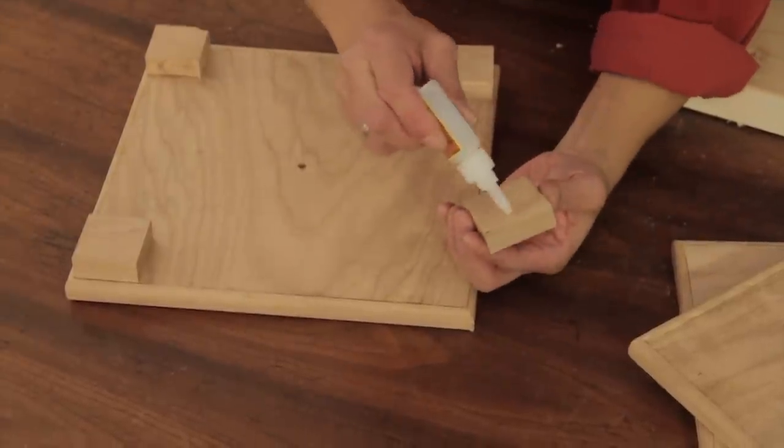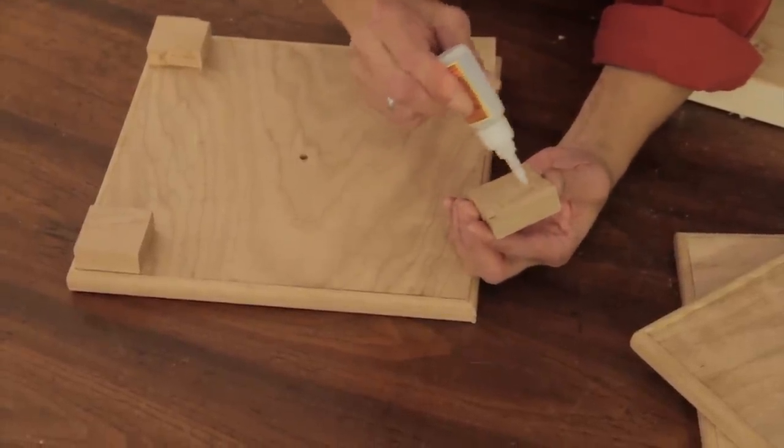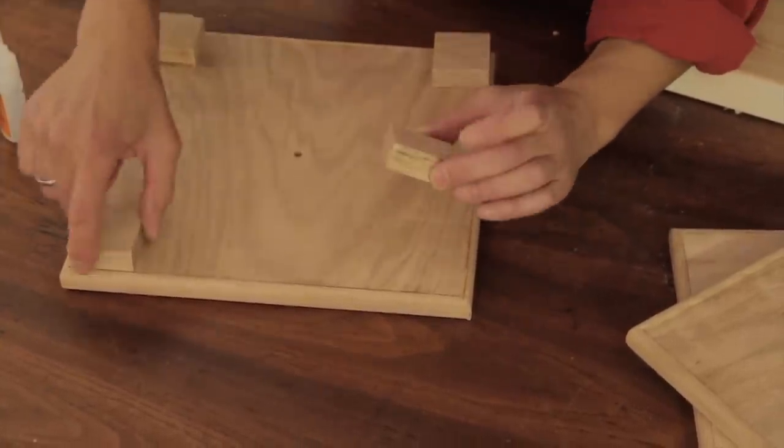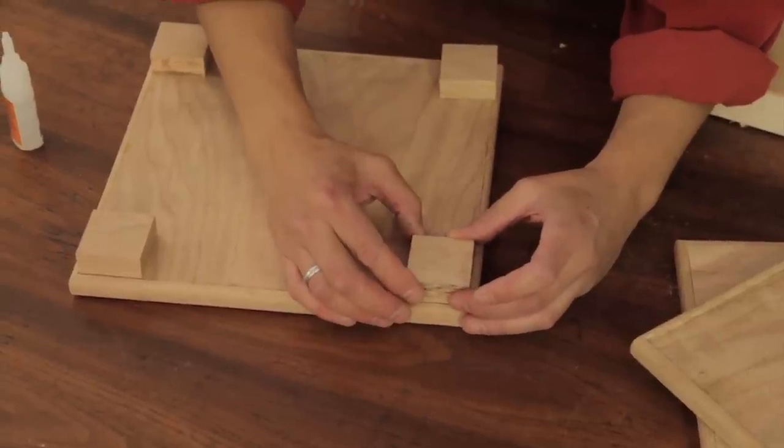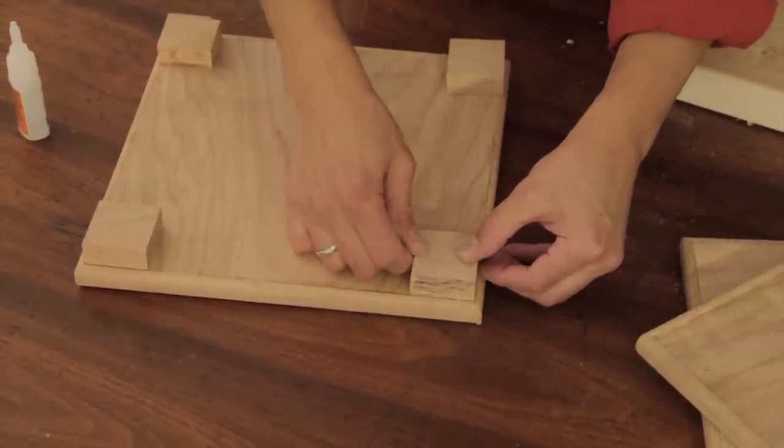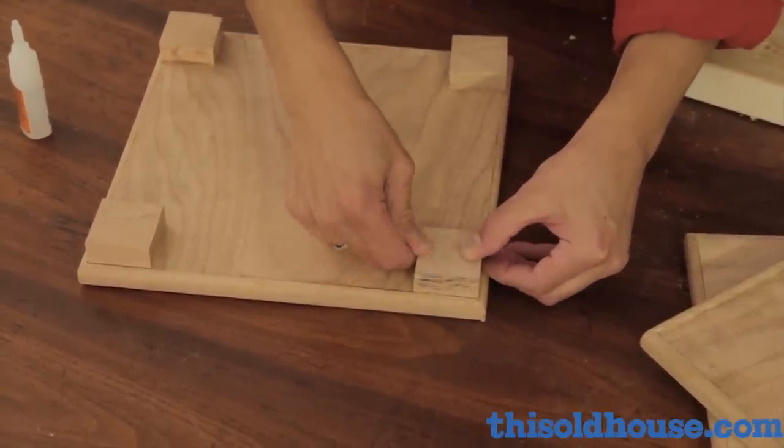For the feet, cut oak one by two into four blocks, each an inch and a half by an inch and a half. Apply a dab of super glue to the four corners on the underside of your base tray, and glue the feet in place.